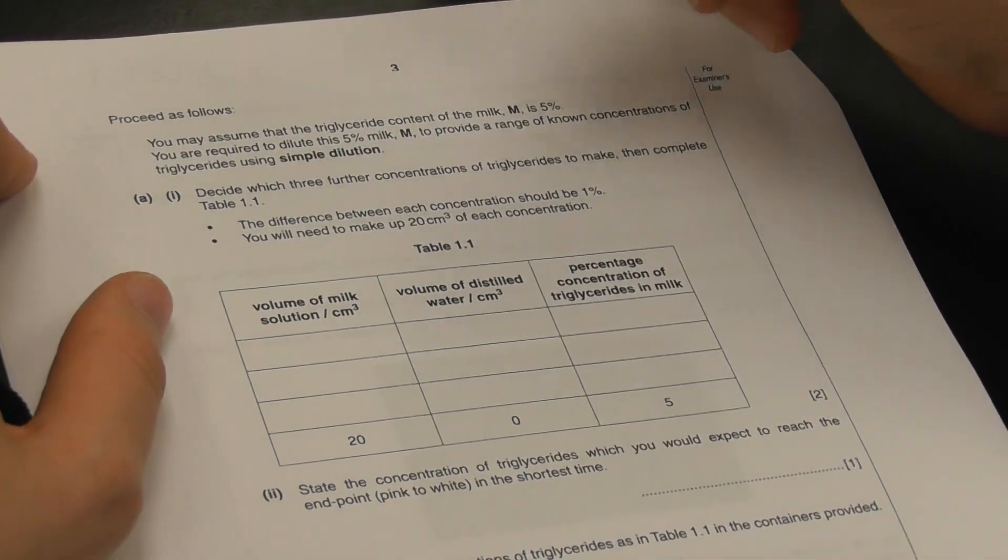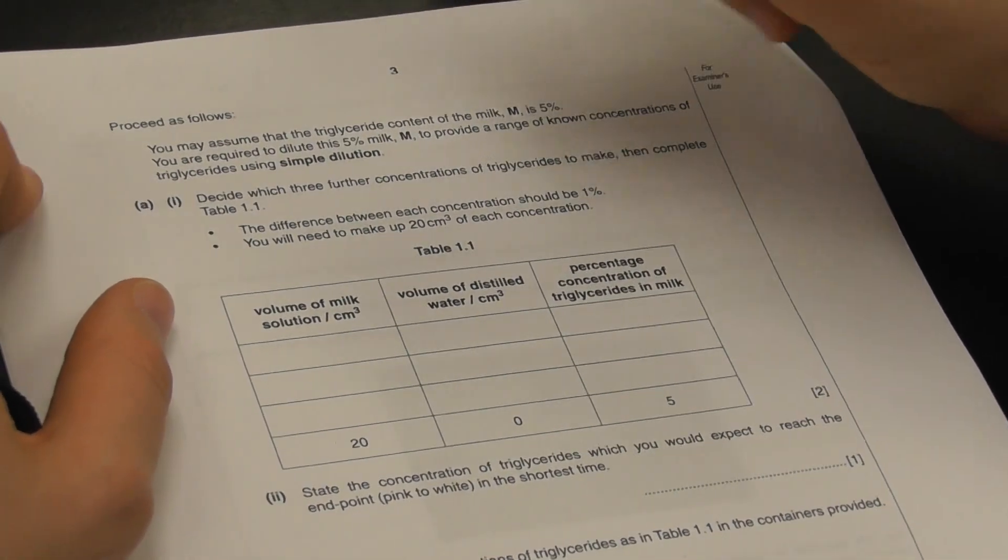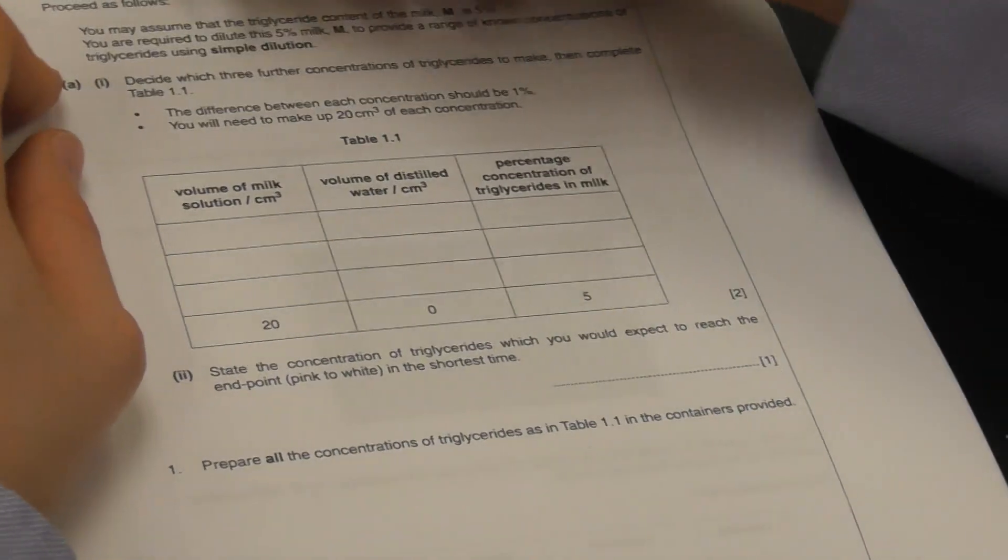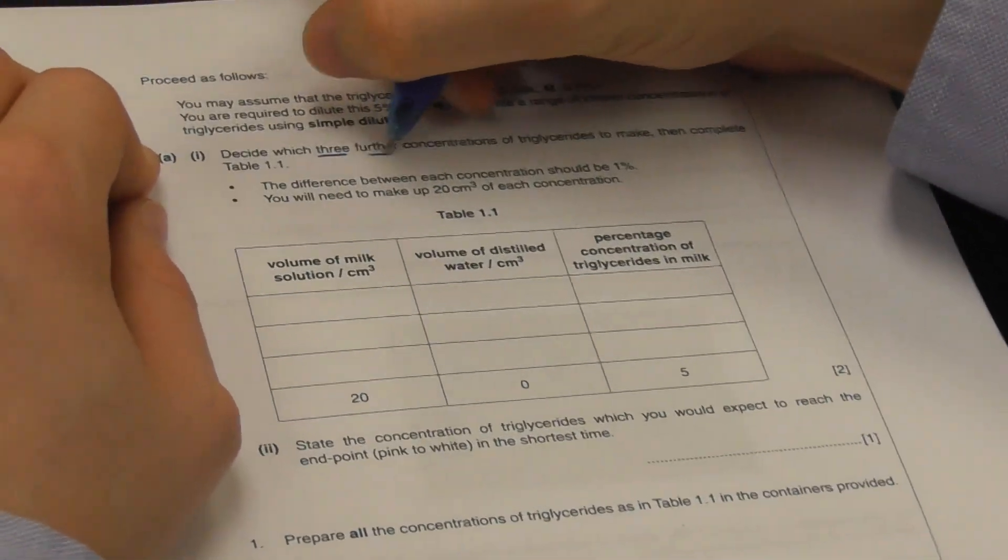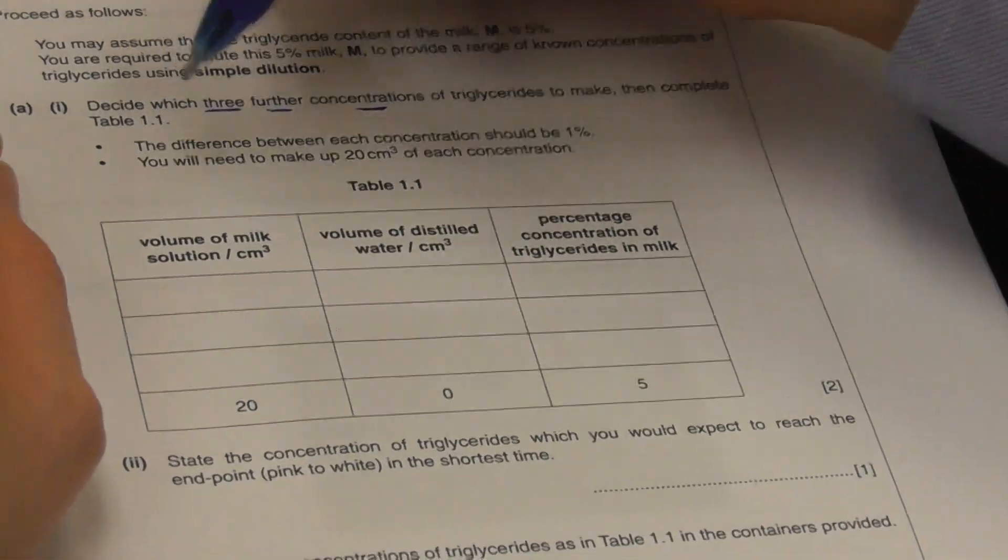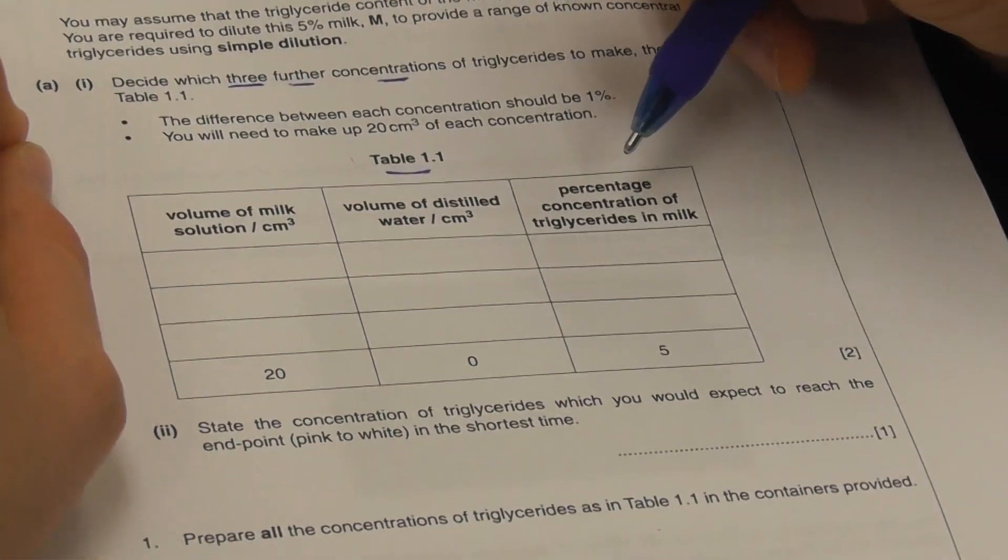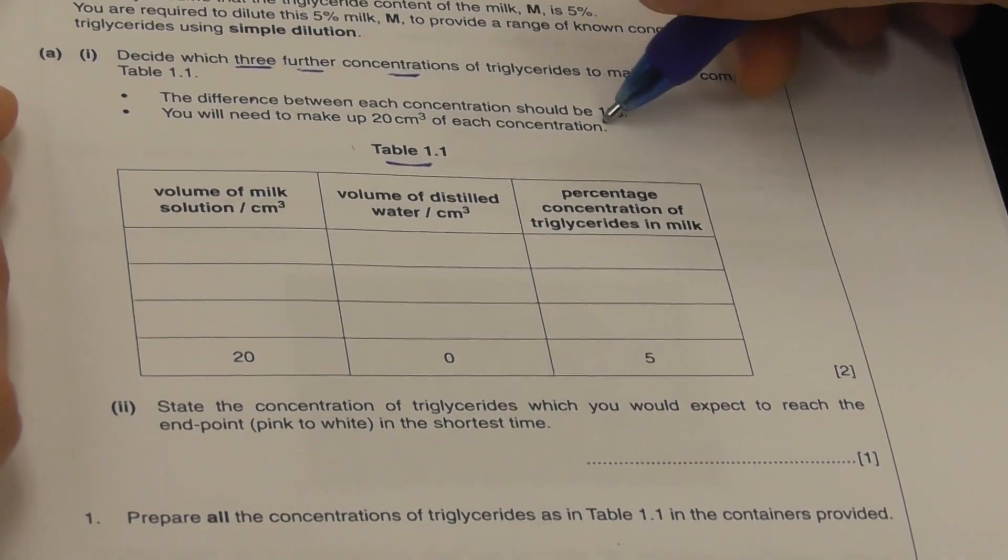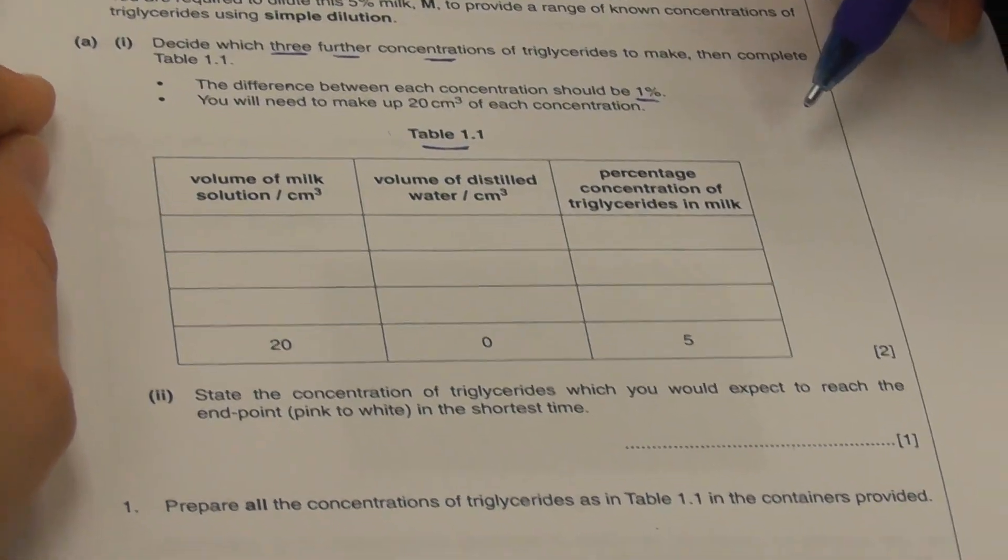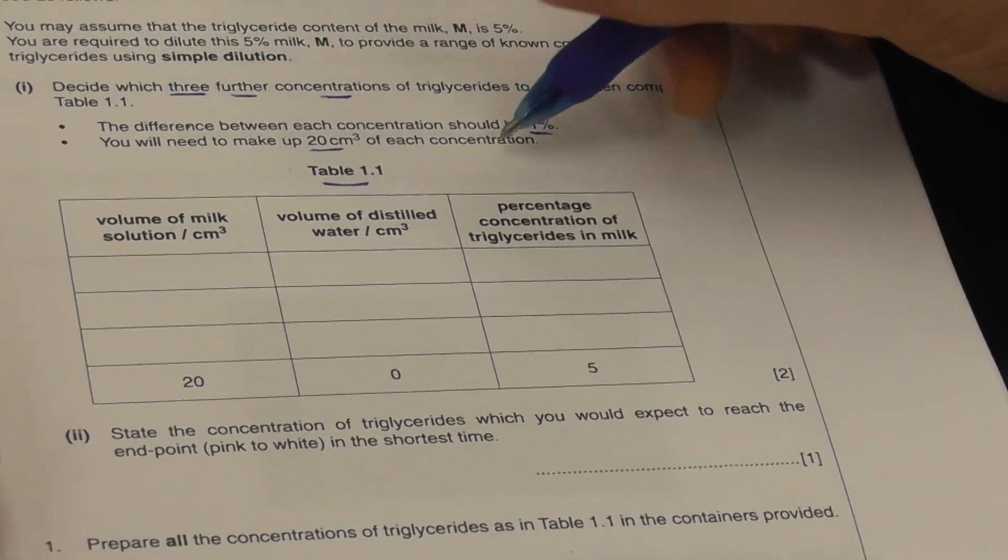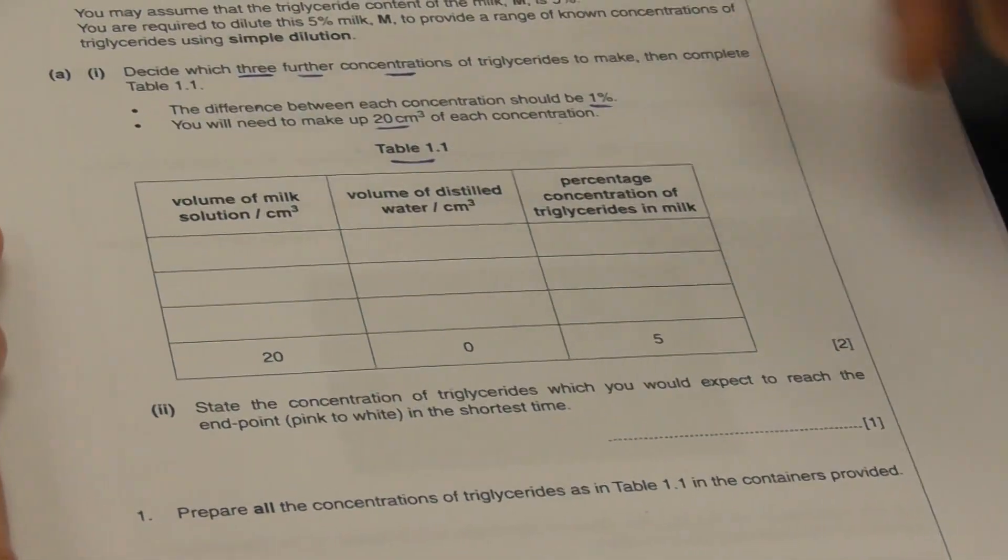We need to dilute 5% milk to provide a range of known concentrations using simple dilution. We need to decide on 3 further concentrations of triglyceride to make, and then complete Table 1.1.